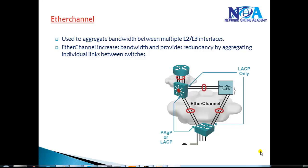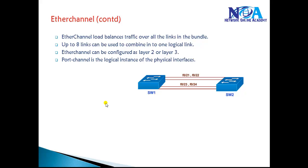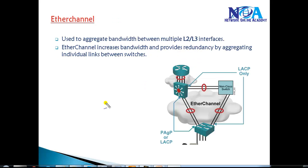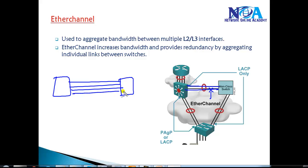EtherChannel helps in optimizing network performance. Going back to spanning tree basics, whenever you add multiple links between switches — for example, two links — by default, one link will go into blocking state. If you connect four different links between two switches, spanning tree automatically puts the remaining three links into blocking state and forwards traffic only on one link. Assuming each link is 100 Mbps, three ports will be in blocking state.